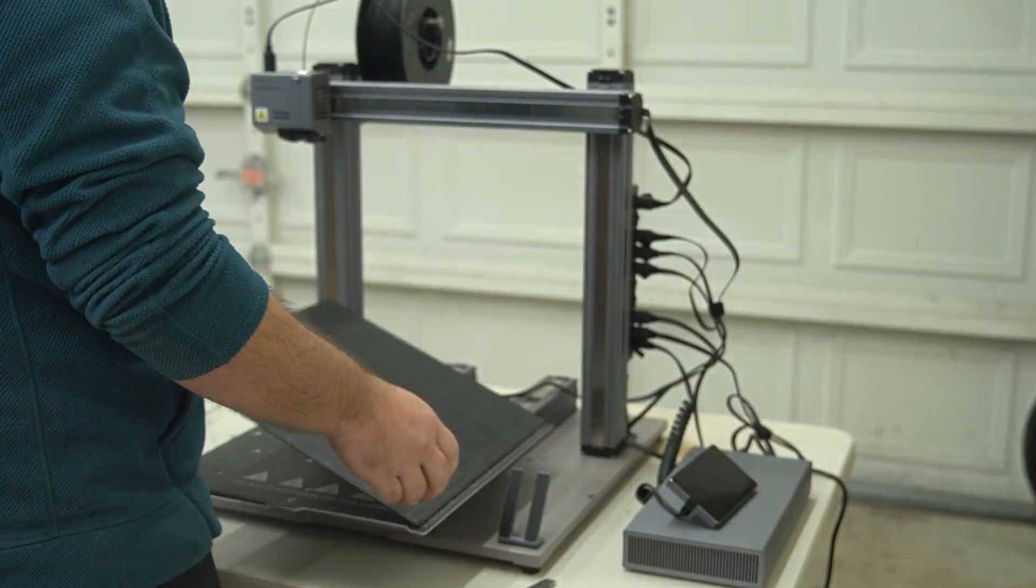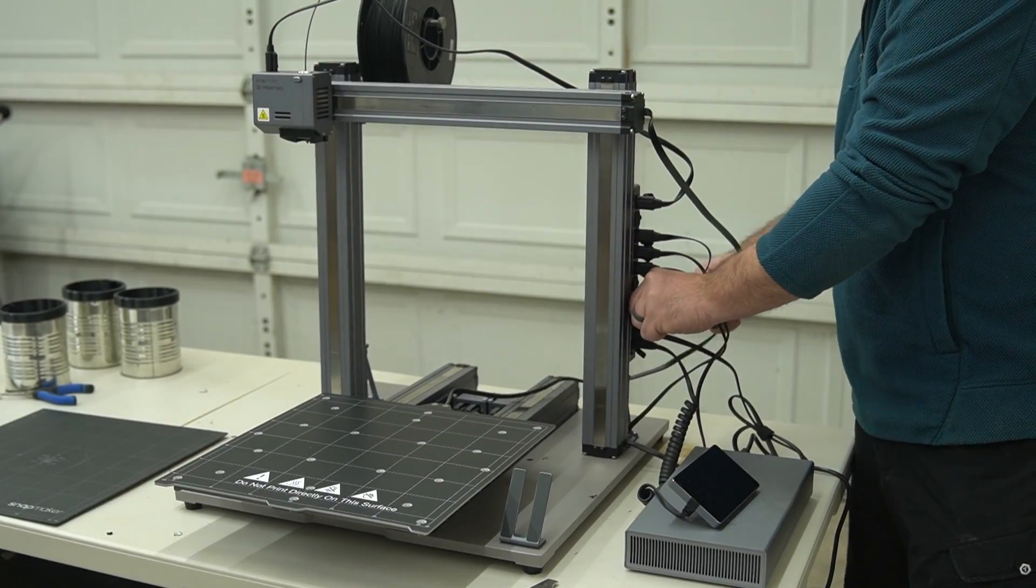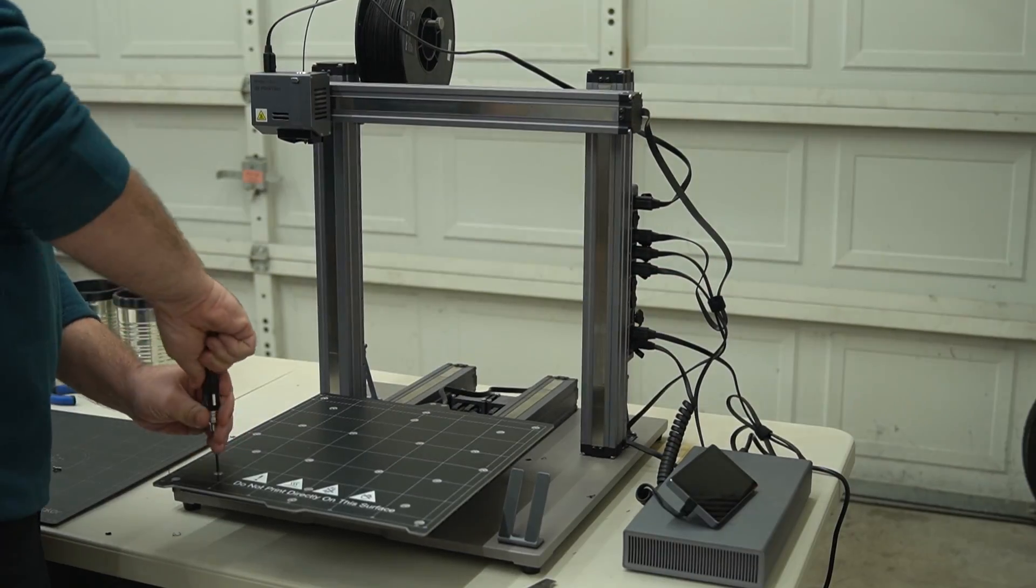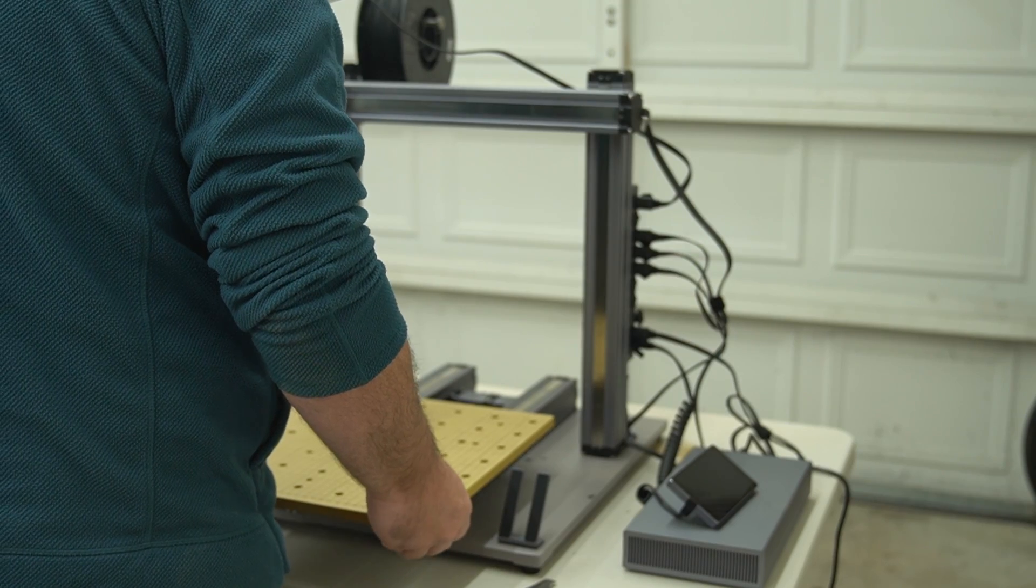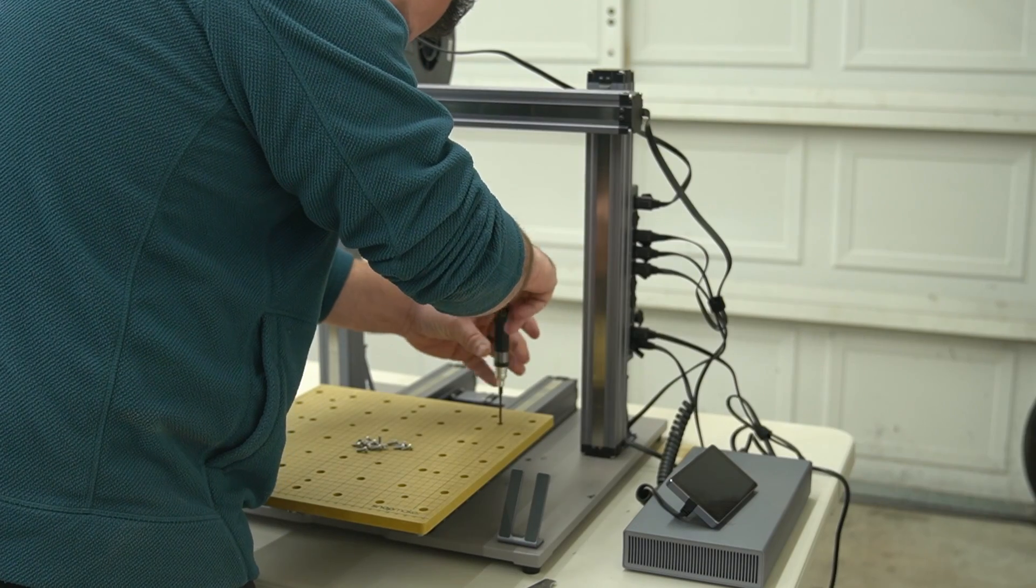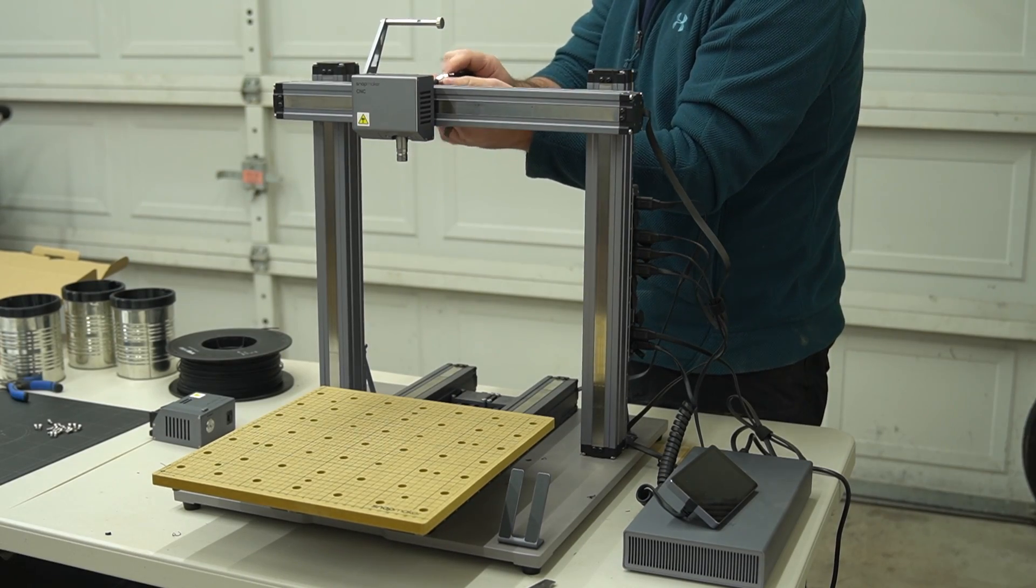Next, I switched the machine setup from the 3D printing setup to the CNC machine setup. Overall, this process took about 10 minutes, and included about 20 screws to undo and redo, and then attaching the different module.